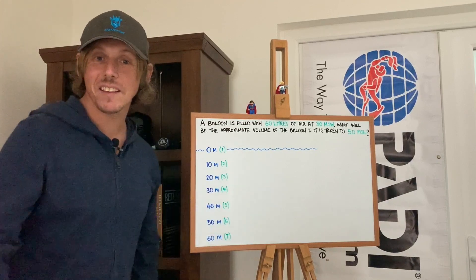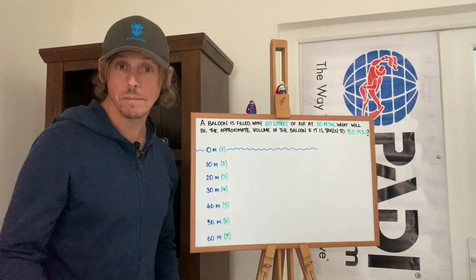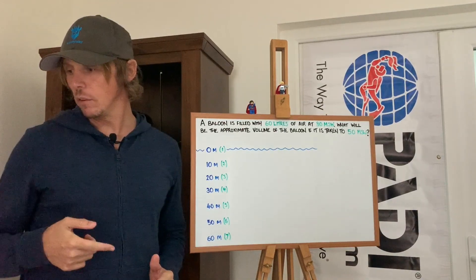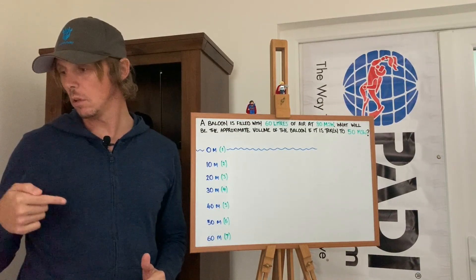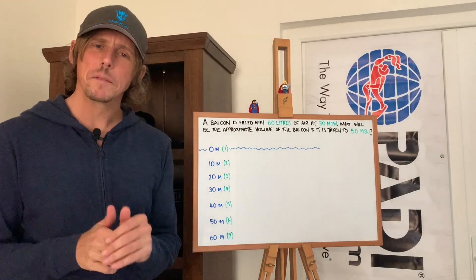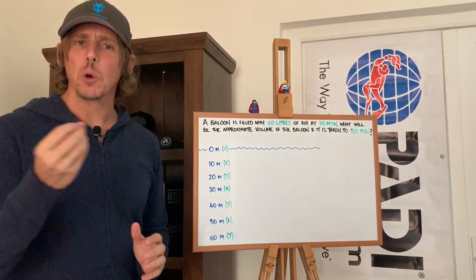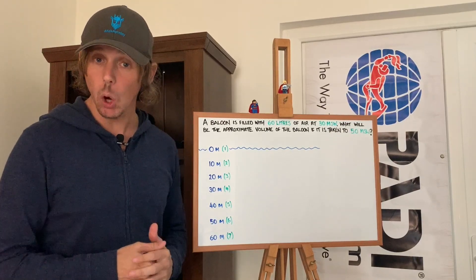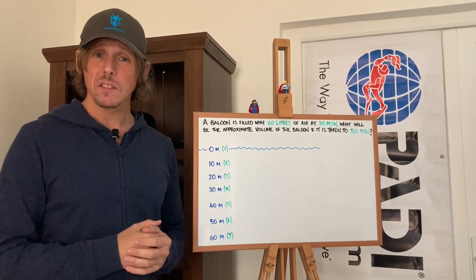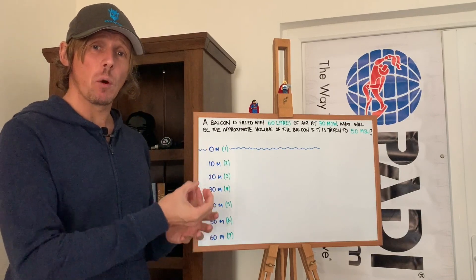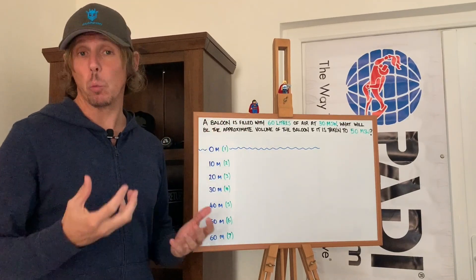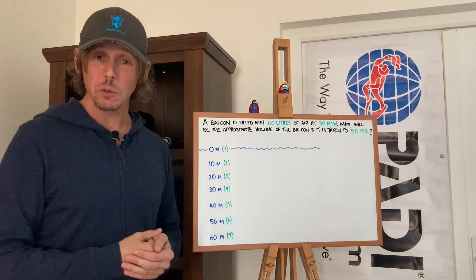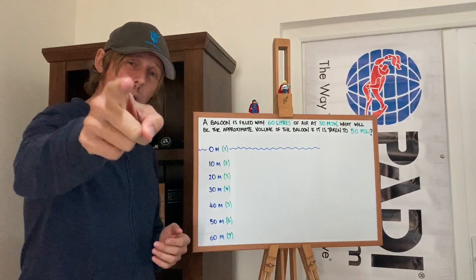Welcome back to this next session of living room lockdown lessons. We'll keep working on that name. What we're going to do is work through a couple of example questions again, this time centered around Boyle's Law. What we're sometimes asked to do is take one set of data and move it from one depth to another depth and work out what the outcome is going to be.